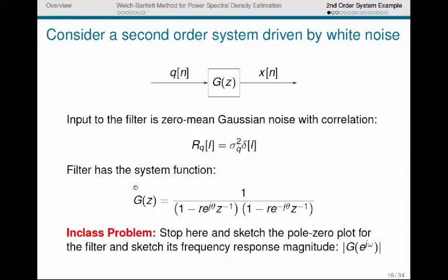We run that through this LTI filter and then we get the output x of n. Now the filter has the system function g of z, 1 over 1 minus r e to the j theta z inverse, 1 minus r e to the minus j theta z inverse. So that's a two-pole system. So right now let's do a quick in-class problem. Stop here and sketch the pole zero plot for this filter and then sketch its corresponding frequency response magnitude.